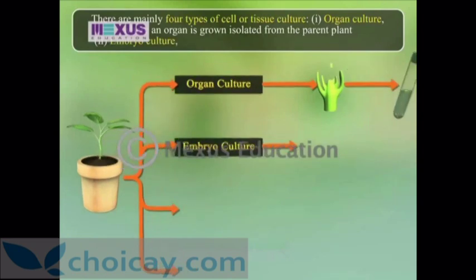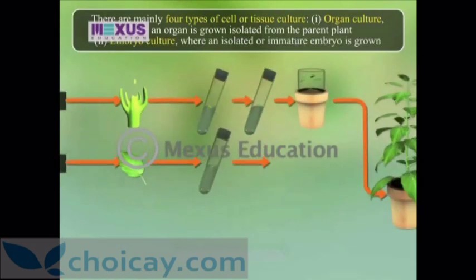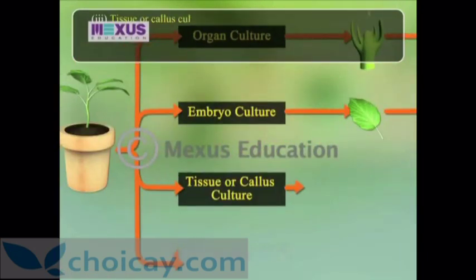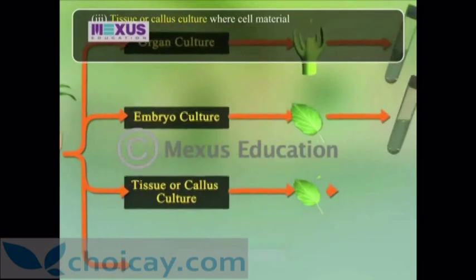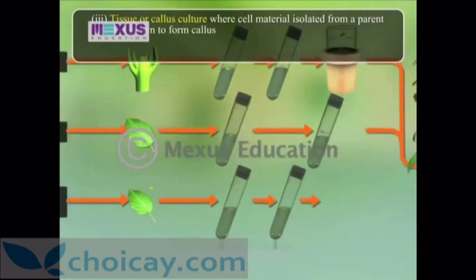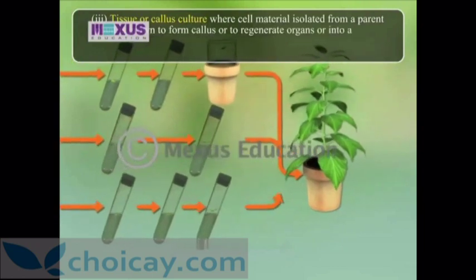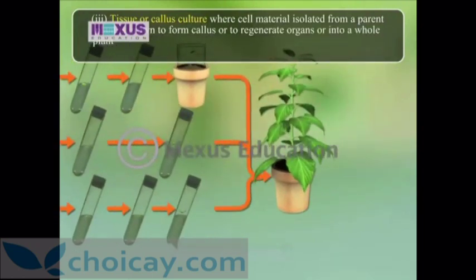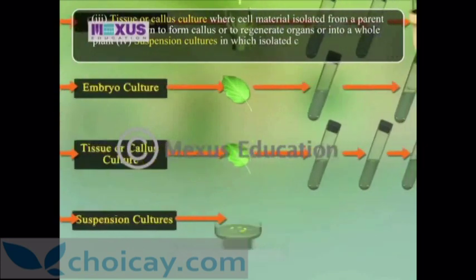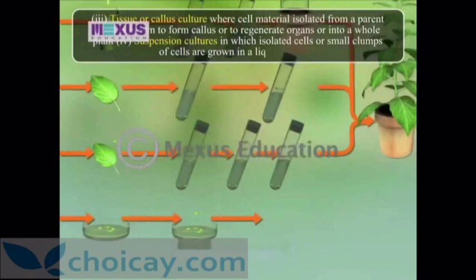3. Tissue culture, where cell material isolated from a parent plant is grown to form callus, or to regenerate organs, or grow into a whole plant. 4. Suspension cultures, in which isolated cells or small clumps of cells are grown in a liquid medium.